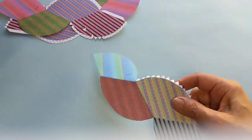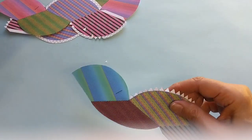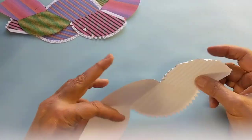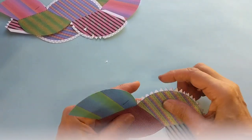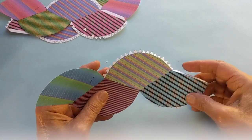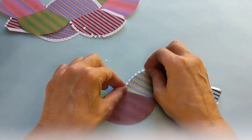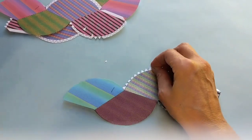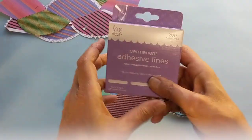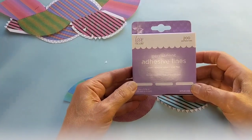White glue just takes a long time for it to dry and you have to sort of hold it in place. So what I use is double sided adhesive. You can use double sided tape. I was using glue dots for a while because you can stretch them along here. What I'm using these days is these adhesive lines. It's like a glue dot except it's a line of glue.